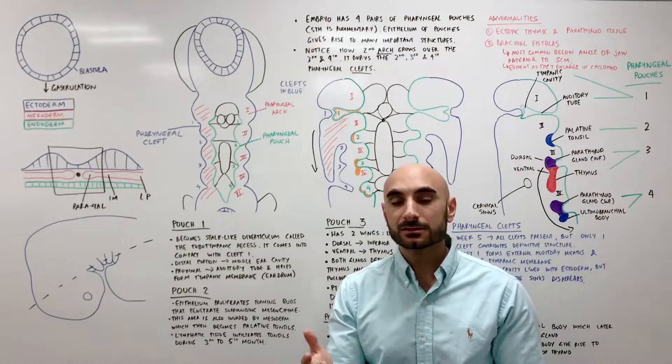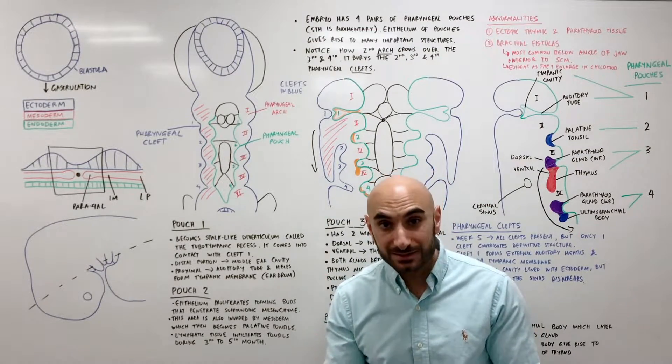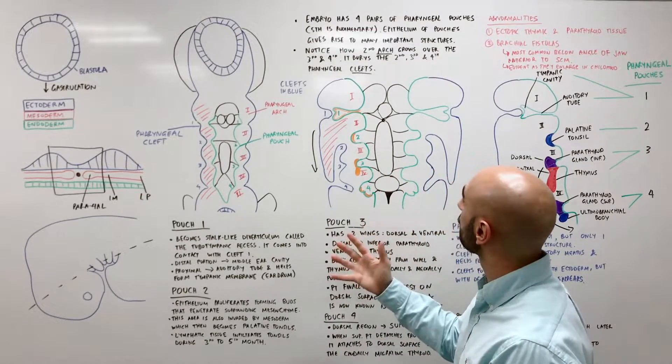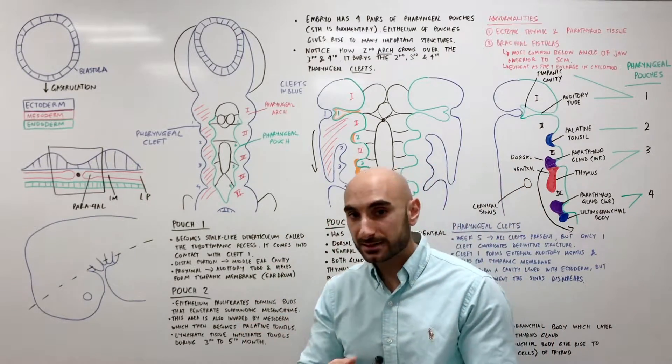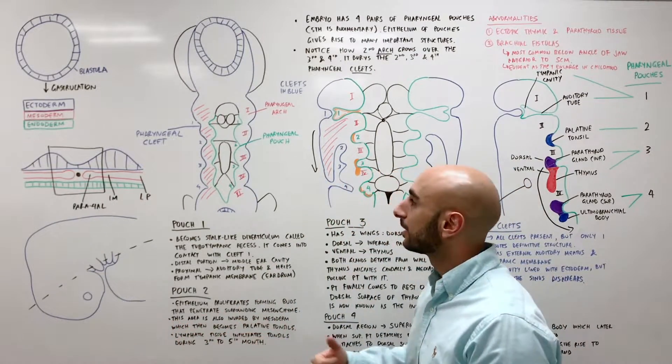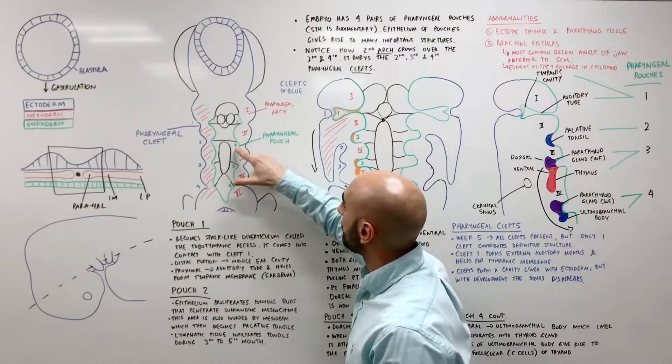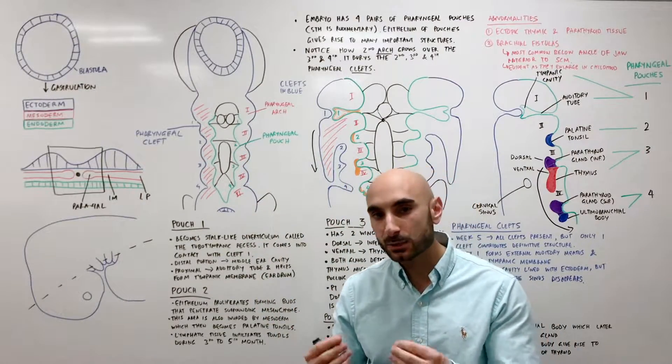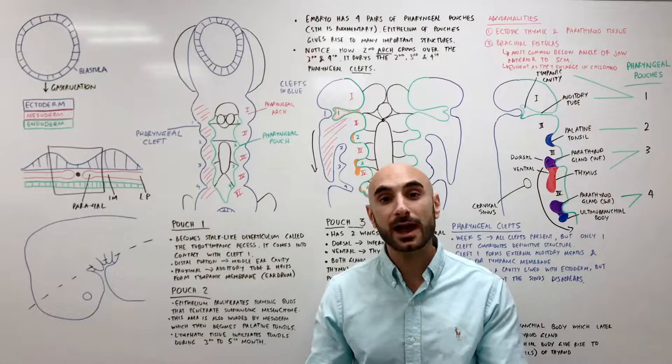And this lining in the middle in green are the pouches, pouch 1, pouch 2, pouch 3, pouch 4. So there are four pairs of pharyngeal pouches. The fifth one is rudimentary which means it will evaporate and become nothing. And the epithelium of the pouches become important structures.